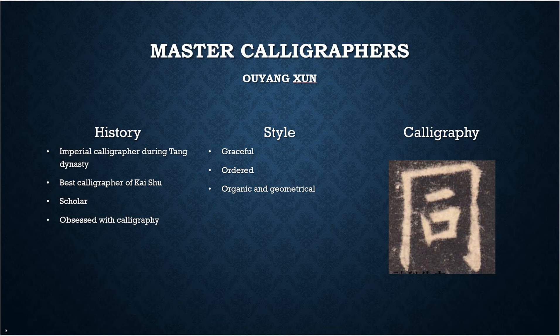For our master calligraphers, I'm going to go over a brief history, a quick summary of their style, and here I have a character detailing their style. Our first master calligrapher is Ouyang Shun, and he was an imperial calligrapher during the Tang dynasty and one of the best calligraphers of Kaiju.